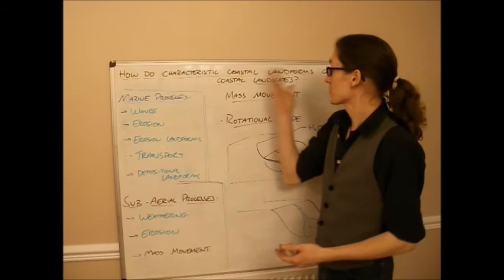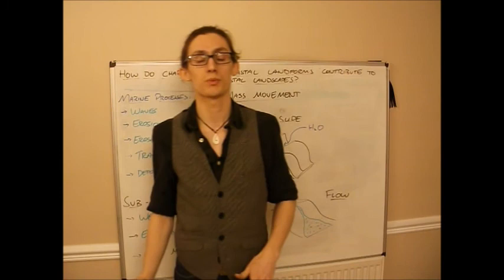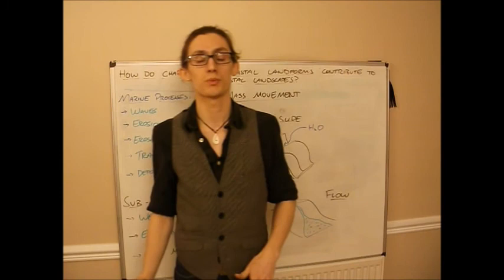Which brings us to the end of the characteristic coastal landforms and how they link to coastal landscapes. There's a lot in the textbook about this. This has just been an overview really. So do go back over it. If you've got any questions let me know. Thanks for watching.